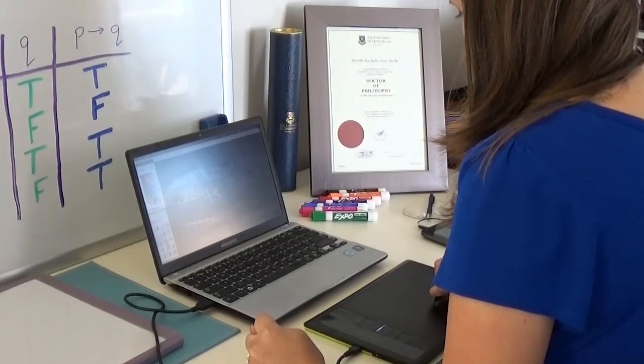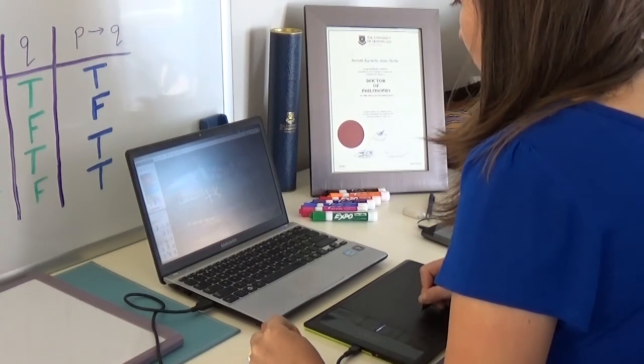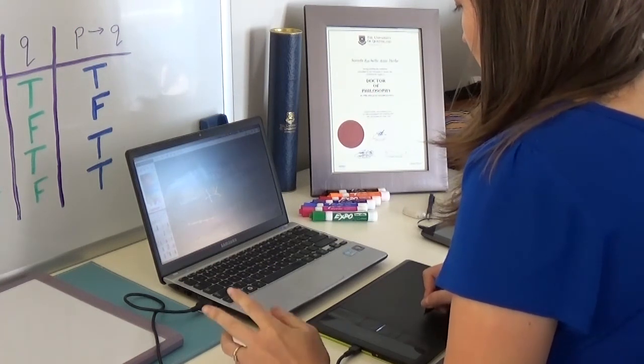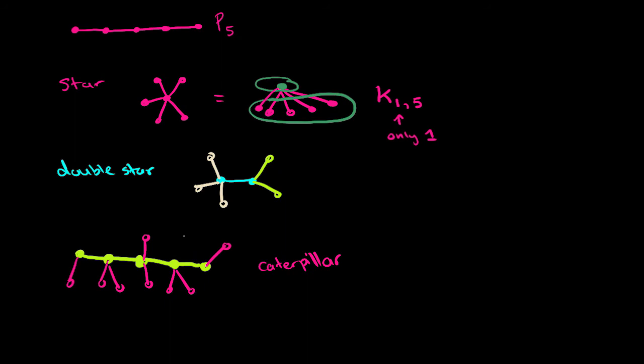So the basic idea for a caterpillar is to have a tree such that any time you remove all of the leaves, you're going to get a path. So think about that for a moment. I've drawn all the leaves in pink, and so if you remove all the leaves, then you just get a path.